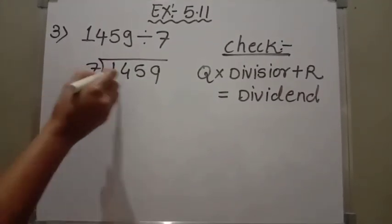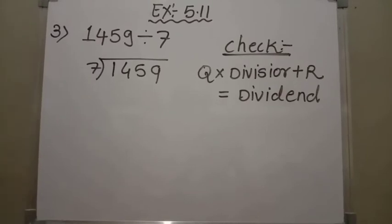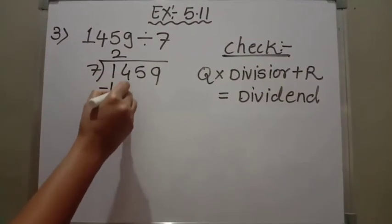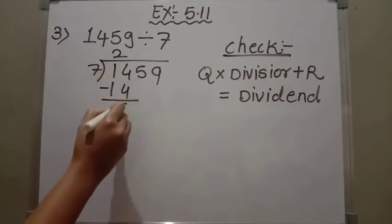Say the table of 7 till you get 14. 7 ones are 7. 7 twos are 14. Here I am going to write 14. 14 minus 14 is 0.